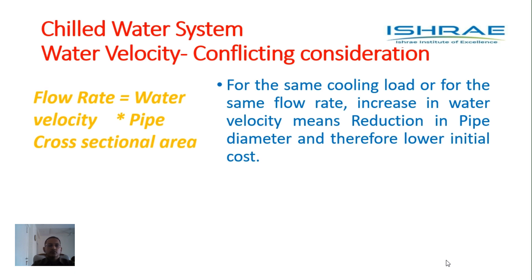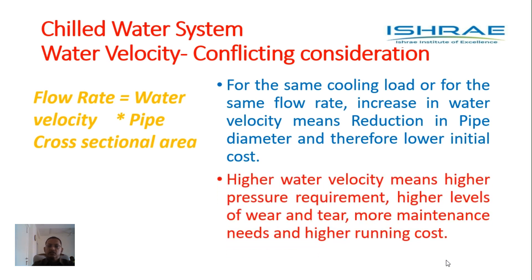Flow rate of chilled water is equal to water velocity multiplied by pipe cross-sectional area. We have already estimated what flow rate is needed based on the heat load. Higher velocity means lesser pipe cross-sectional area, means lesser diameter. Lower velocity means higher cross-sectional area, means higher diameter of pipes. So for the same cooling load or the same flow rates, increase in water velocity means reduction in pipe diameter and therefore lower initial cost. However, higher water velocity means higher pressure requirement, higher levels of wear and tear, more maintenance needs, and higher running cost.